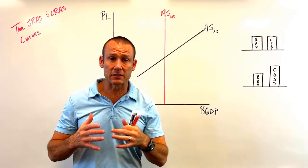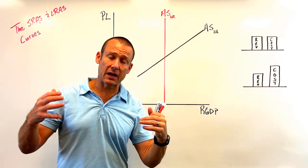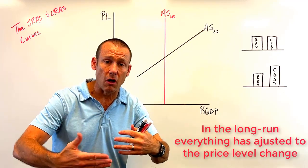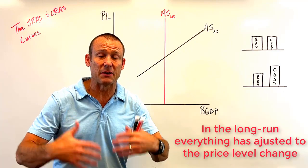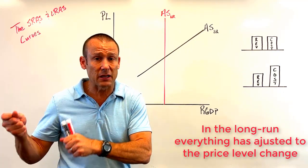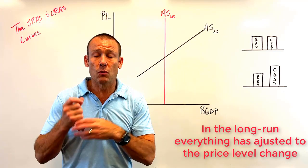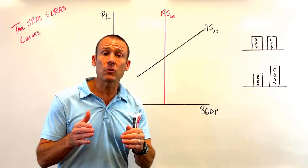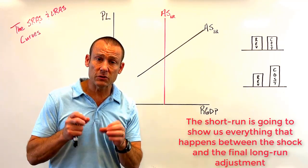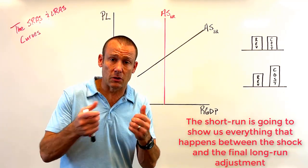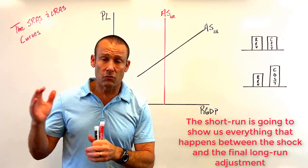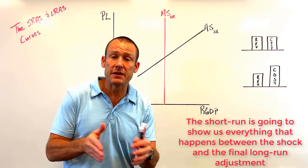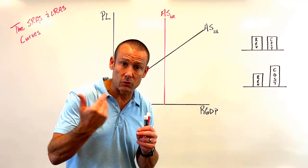The long run perspective is basically saying: when we get a shock and all the dominoes that are going to fall in response to that shock have fallen — once everything has fully changed in response to that shock — what is going to be the impact on total production? The short run perspective shows us what's going to happen to total production in the near term, right when we get that first initial shock. It lets us see those dominoes falling.